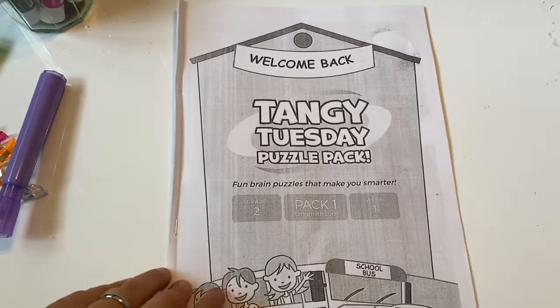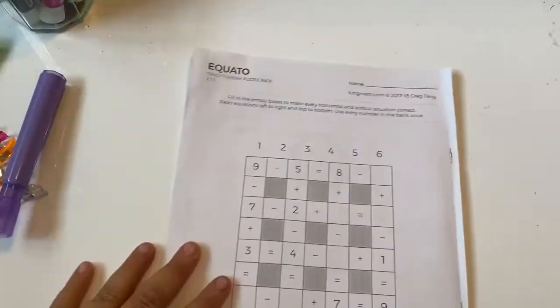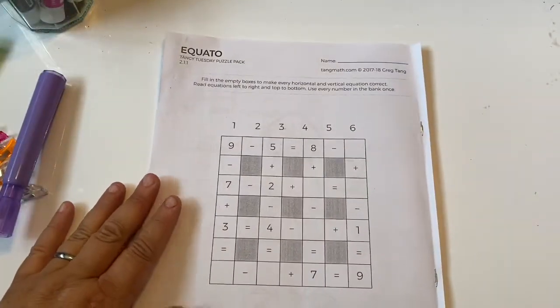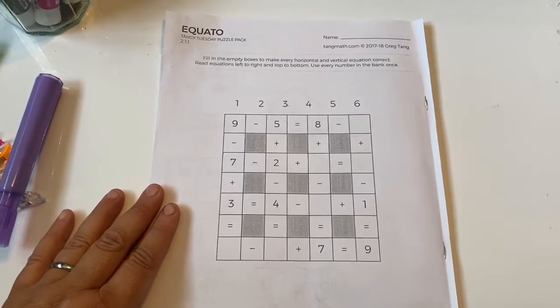Okay, so here's our last activity on Fridays for the Tiny Tuesday Pack. And this is called Equeto. And this is kind of like Sudoku, if you've ever seen your parents do that or if you've done that.